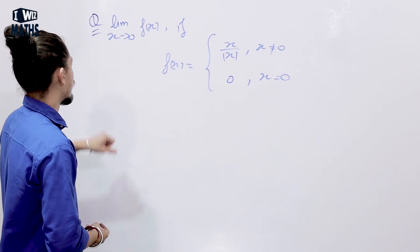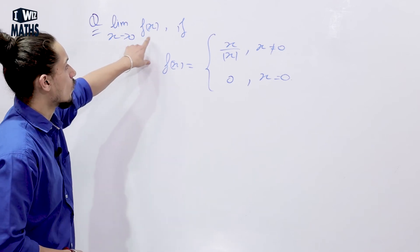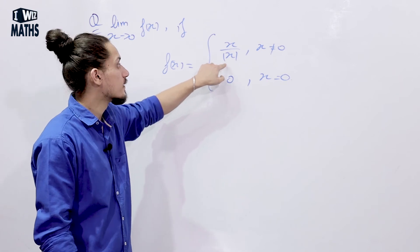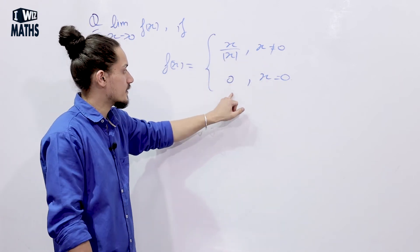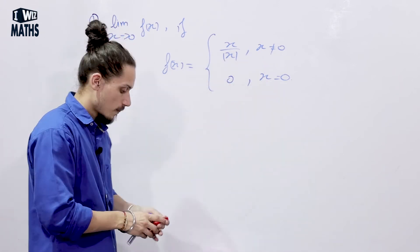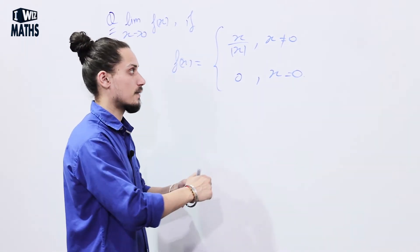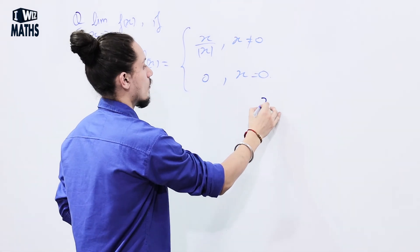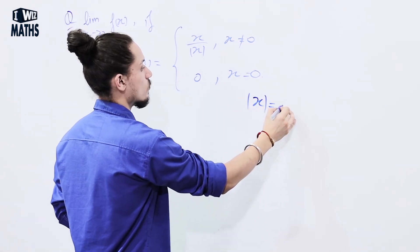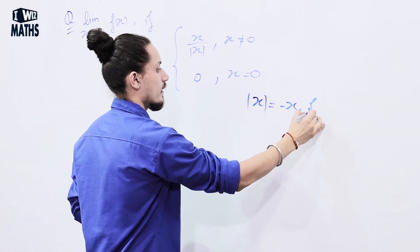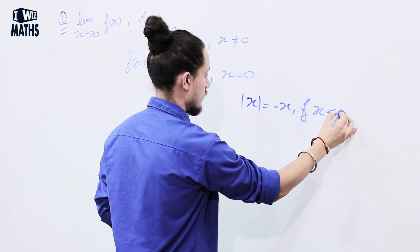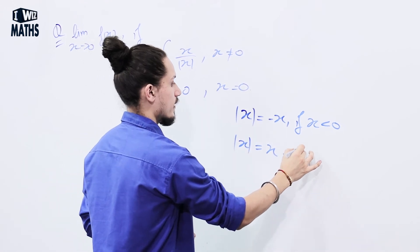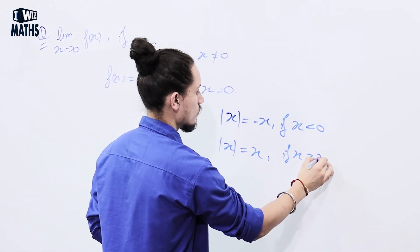In this example, we have to find lim (x → 0) f(x) where f(x) = x / |x| at x ≠ 0, and f(x) = 0 if x = 0. Before solving, let me remind you: |x| = -x if x < 0, and |x| = x if x ≥ 0.